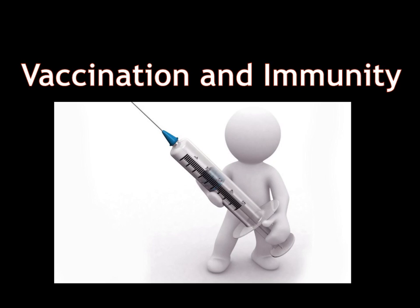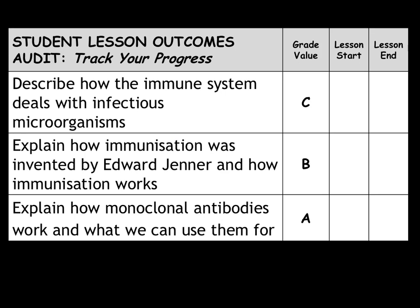This is the fifth video in the Edexcel B3 revision tutorial series. In this video, we'll be looking at vaccination and immunity, as well as the production of monoclonal antibodies. We will look at how the immune system deals with infectious microorganisms, how immunization was invented by Edward Jenner, how immunization works, and how monoclonal antibodies work and what we can use them for.